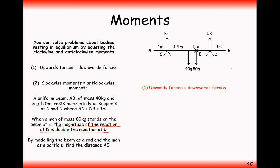Using strategy one, upwards forces equals downwards forces: RC plus 2RC balances 40G plus 80G, giving 3RC equals 120G. Therefore the force at pivot C is 40G and the pivot at D has a reaction force of 80G. We can replace those values on the diagram.